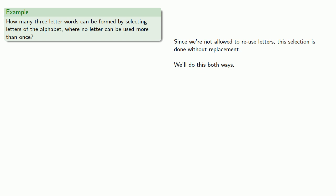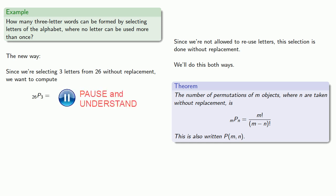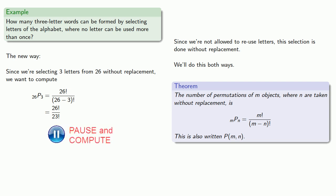But, we have this nice new formula that applies to this situation. So, let's use the new way. Since we're selecting three letters from 26 without replacement, we want to compute 26 permute 3. And, our formula says that's 26 factorial, divided by 26 minus 3 factorial, or 26 factorial, divided by 23 factorial. We'll calculate 26 factorial, and 23 factorial, and divide.